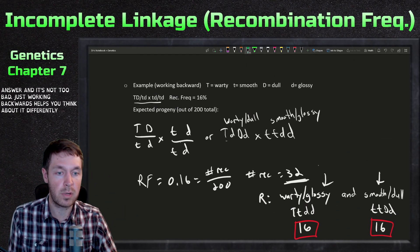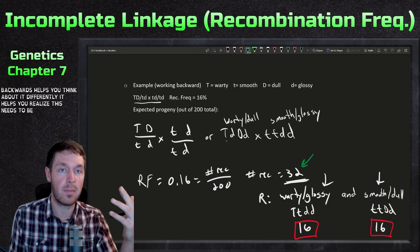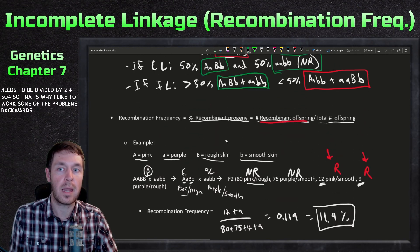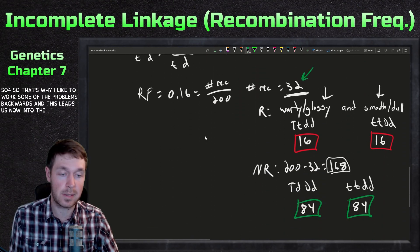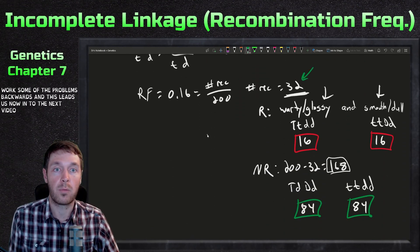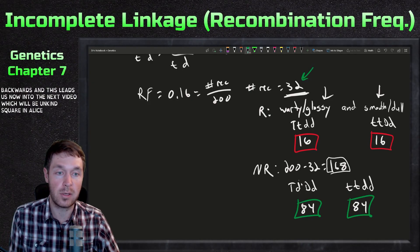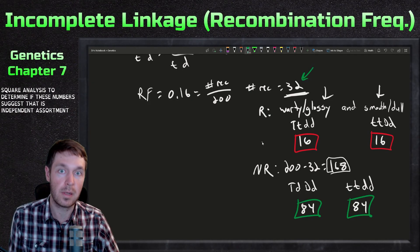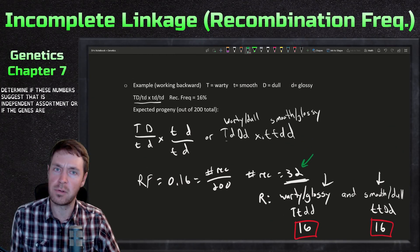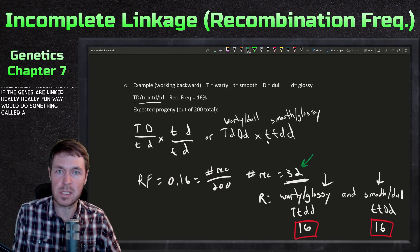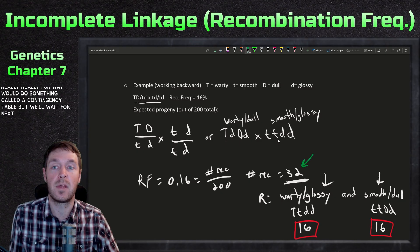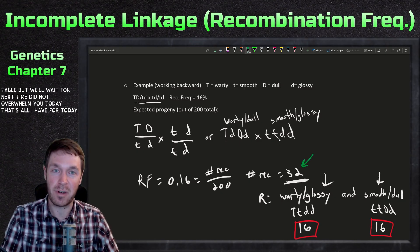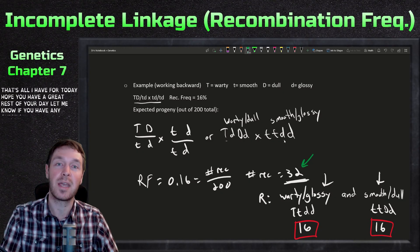Working backwards helps you think about problems differently and reinforces dividing by two. This leads into the next video on chi-square analysis using a contingency table to determine whether results suggest independent assortment or linkage. That topic deserves its own video. Hope you all have a great rest of your day — let me know if you have any questions!